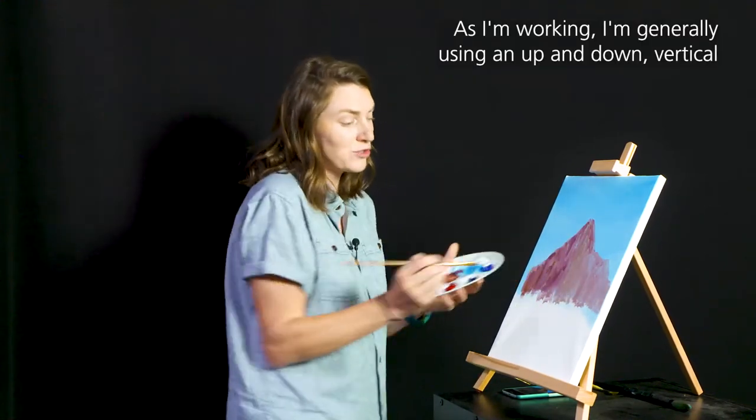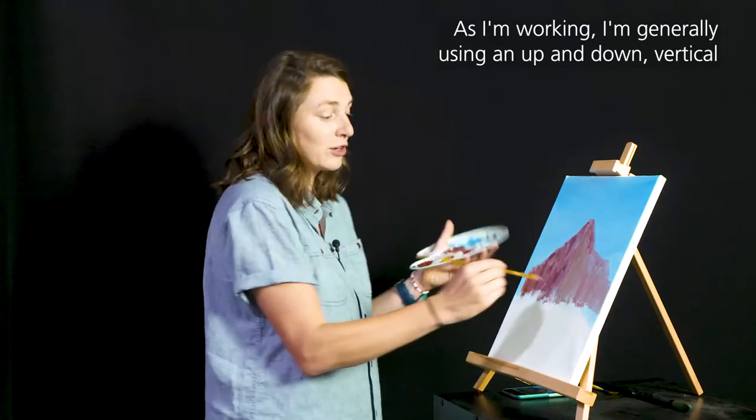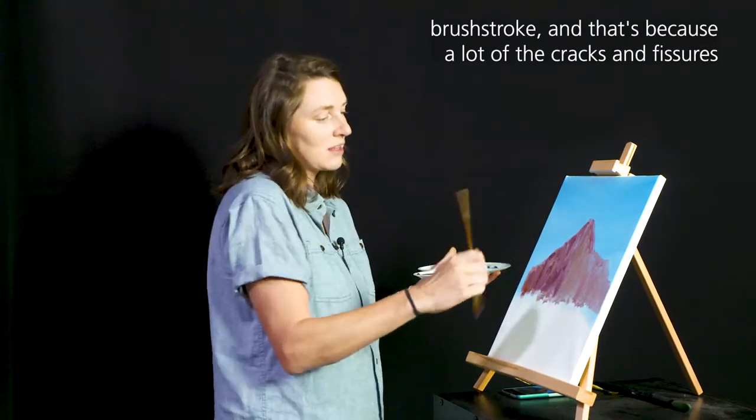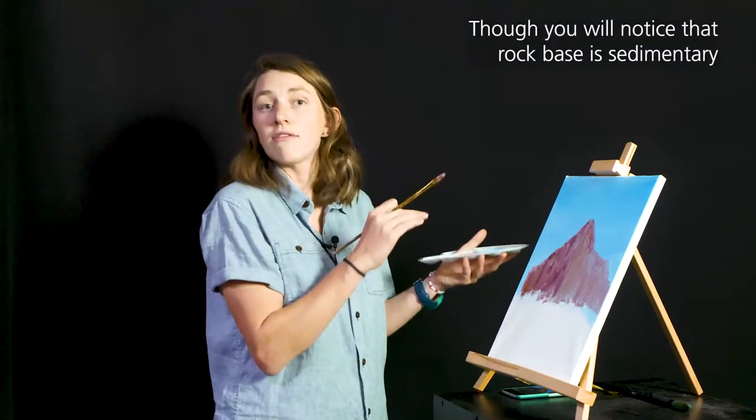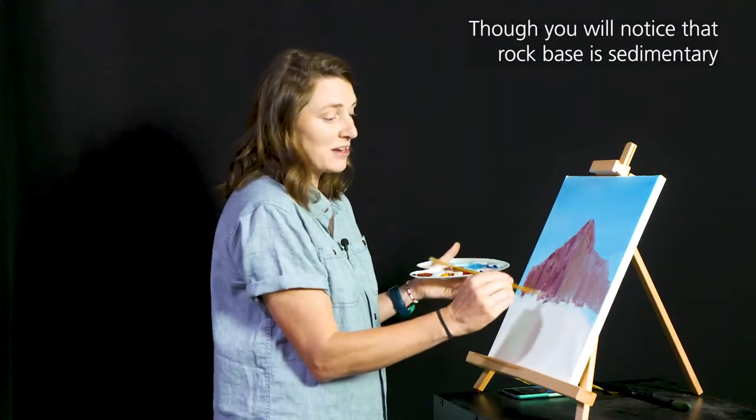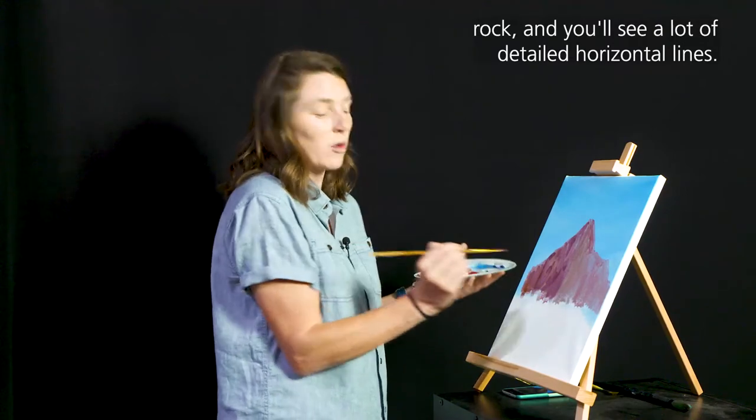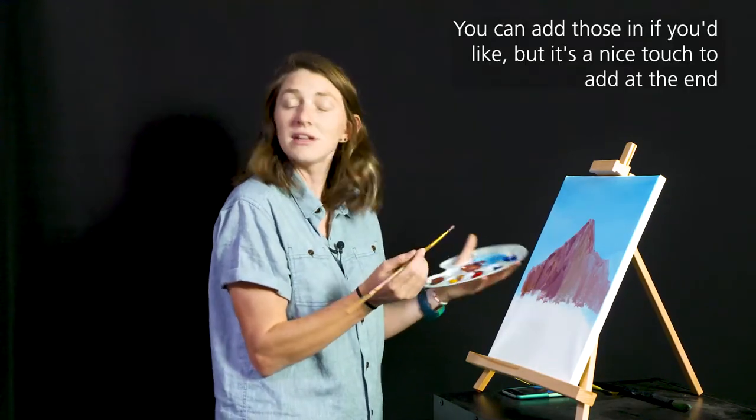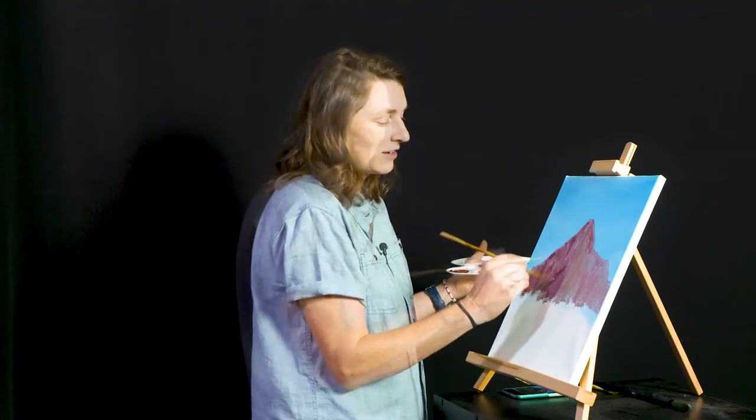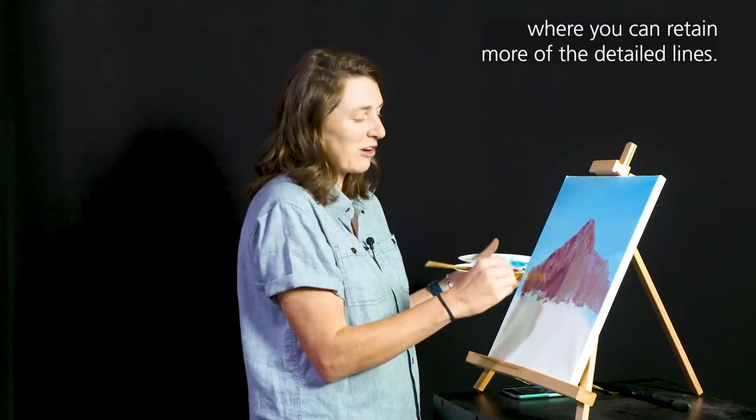As I'm working I'm generally using an up and down vertical brushstroke. That's because a lot of the cracks and fissures in the rock are vertical. Though you will notice that the rock base is a sedimentary rock and you'll see a lot of more detailed horizontal lines. You can add those in if you'd like, but it's a nice touch to add at the end where you can retain more of the detailed lines.